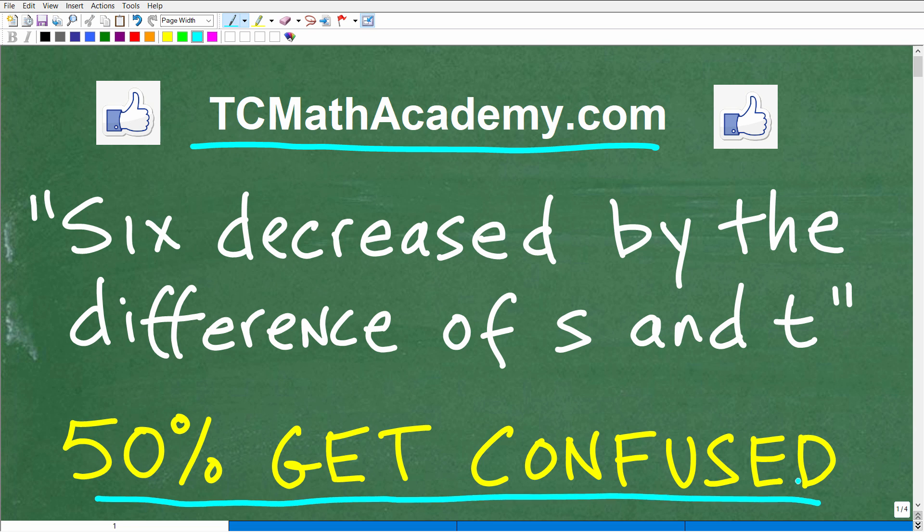And I suspect that maybe half of you out there are going to get confused on this problem. Hopefully you can get this right. But let me read the problem to you. It says six decreased by the difference of S and T is equivalent to what in terms of a variable expression? So if you can figure this out, put your answer into the comment section.